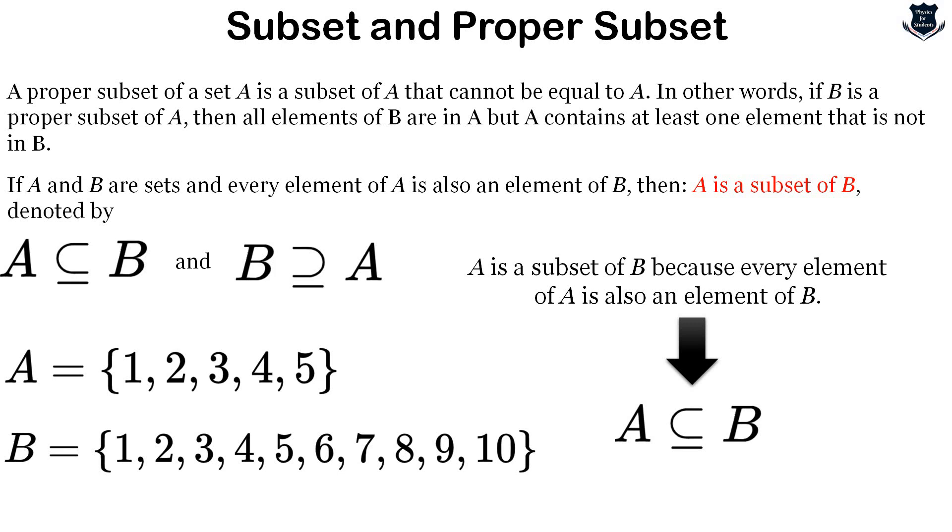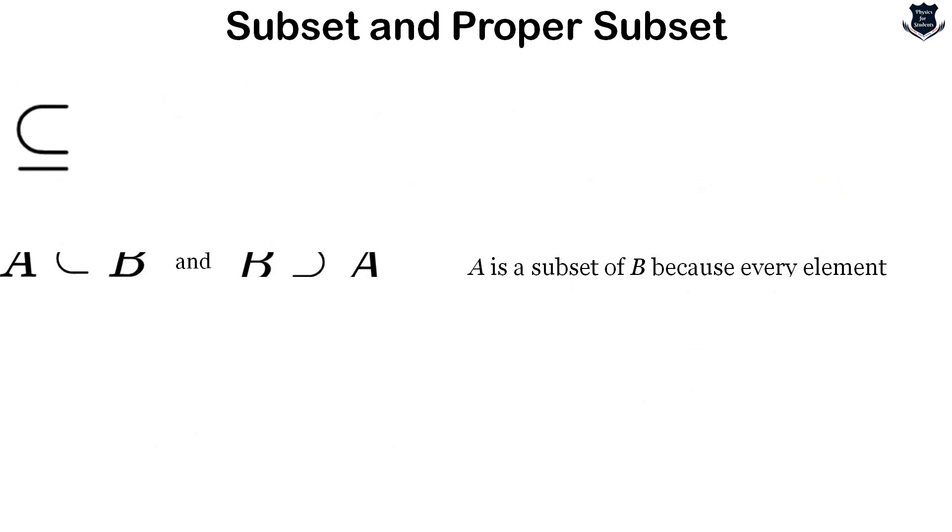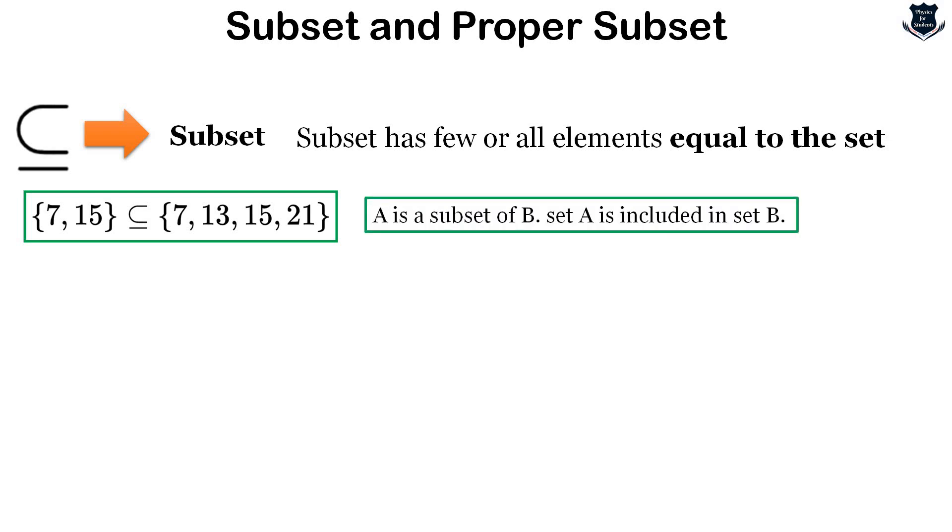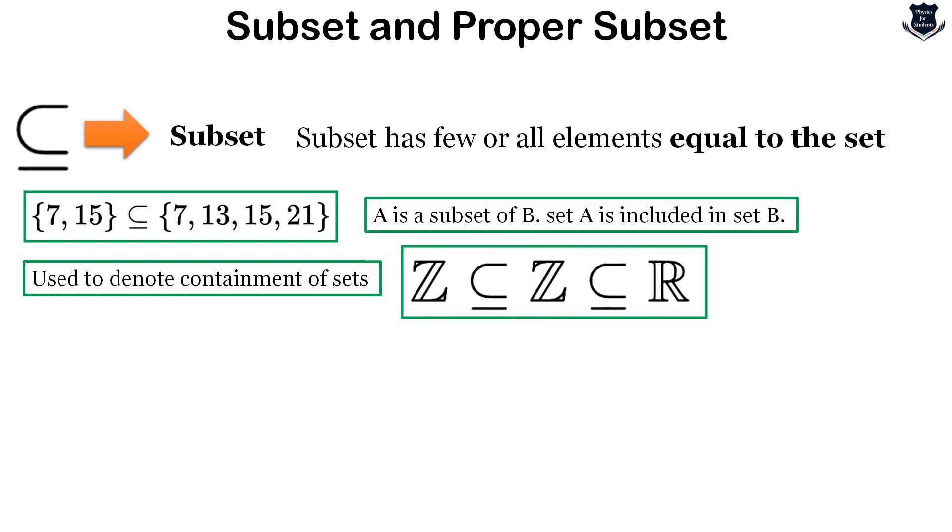A subset has few or equal elements to the set. If A and B are sets, then A is a subset of B means set A is included in set B, and it's used to denote containment of sets. This example is very trivial and self-explanatory.